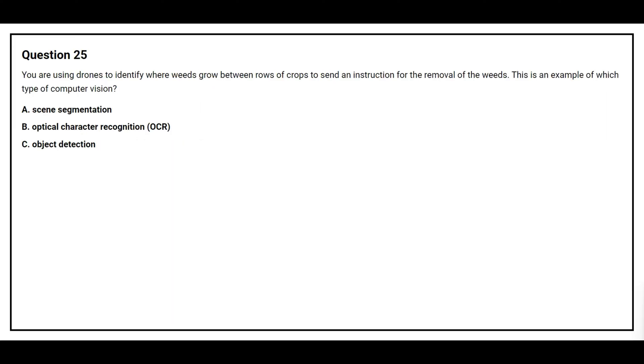Question number 25. You are using drones to identify where weeds grow between rows of crops to send an instruction for the removal of the weeds. This is an example of which type of computer vision. Option A, scene segmentation. Option B, optical character recognition, OCR. Option C, object detection.